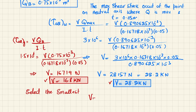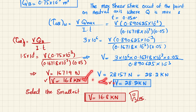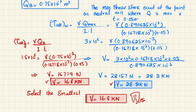The answer is V = 16.8 kN. We cannot use 28.2 kN because if we apply that shear force, the glue at B would be overstressed. However, 16.8 kN satisfies both conditions: the glue stress stays within 1.5 MPa, and when substituted into the wood formula, the shear stress remains below the allowable 3 MPa for wood.